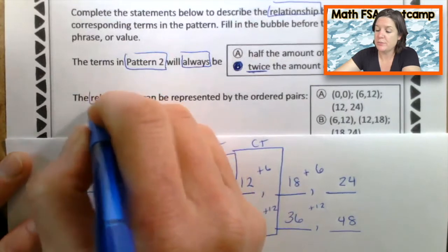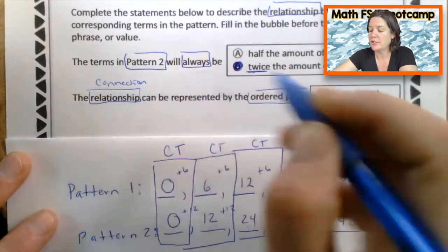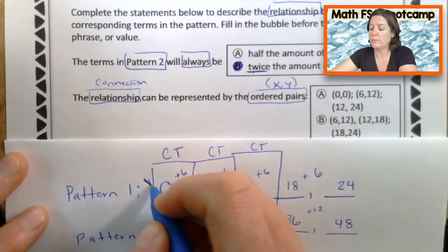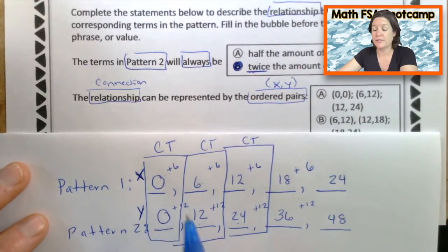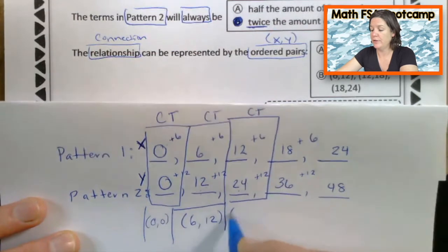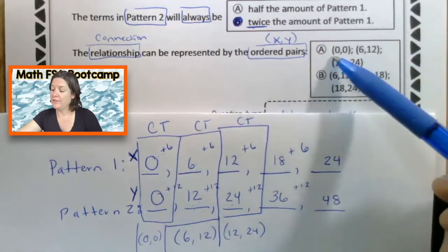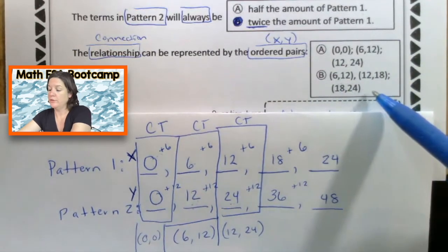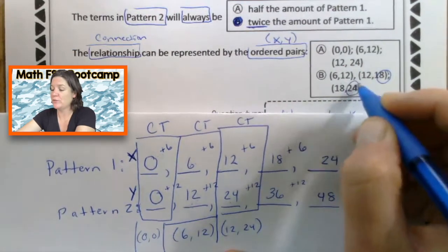And now the relationship or the connection can be represented by the ordered pairs. The connection can be represented by the ordered pairs, X and Y. These two are corresponding terms. Pattern one represents X. Pattern two represents the Y. So we have (0,0) here. The ordered pair would be (6,12), (6,12), and (12,24), (12,24). Here we have (0,0). That's what we need. (6,12) and (12,24). And then we also have (6,12), (12,18). That's wrong. And (18,36). This is (18,24). That's wrong. So we can eliminate B and we'll choose A here.